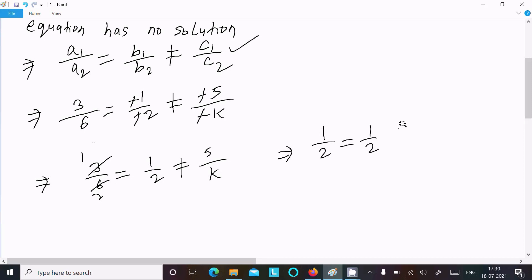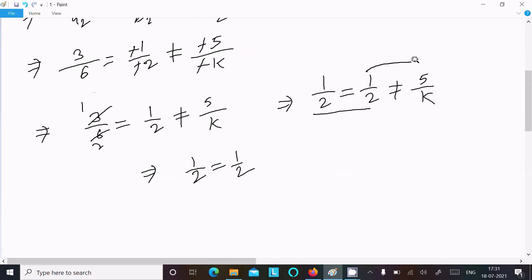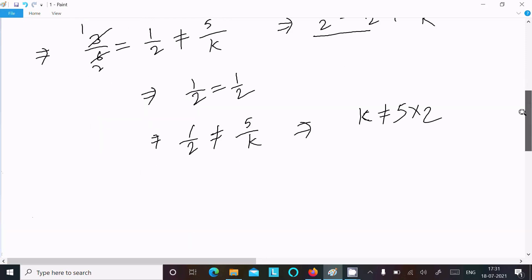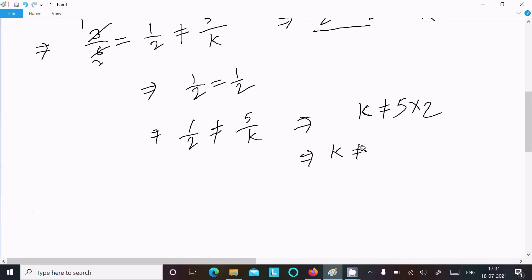So 1 by 2 equals 1 by 2, that's fine. But for 1 by 2 not equal to 5 by k, do the cross multiplication. So k not equal to 5 times 2, therefore k not equal to 10. This is the answer: k not equal to 10.